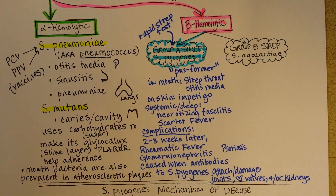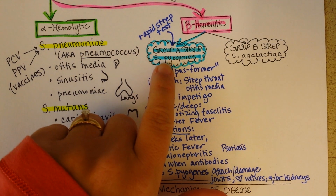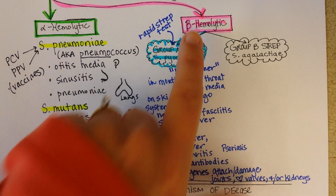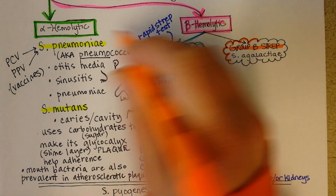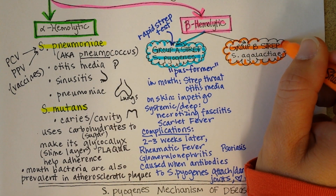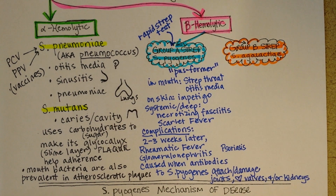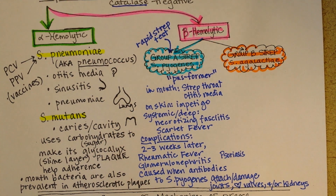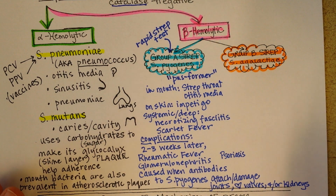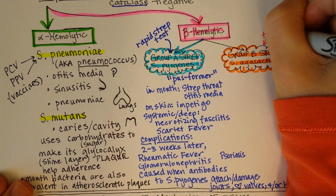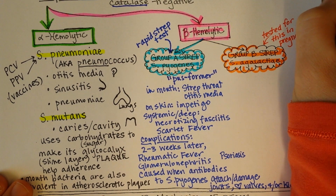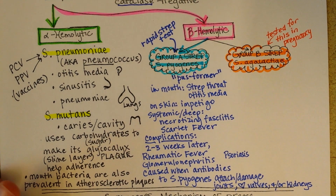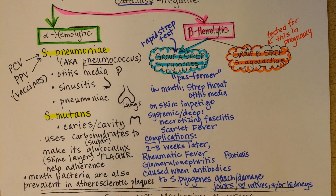Now, Group B strep, as opposed to Group A strep. It's also beta hemolytic, meaning it damages red blood cells. This is Streptococcus agalactiae. This strep is famous because it's the one that women are tested for during pregnancy. If a woman tests positive, the doctor or midwife might say: yes, you tested positive for Group B strep, so we recommend that you receive antibiotics during delivery.